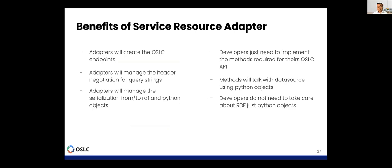Here we have the main concept: the Service Resource Adapter. We are using this as a meta class in which we define all the methods supported for the OSLC specification — the query capability, the creation factory, and so on. These methods will be defined in this meta class, and the adapters — the implementation of this class — will implement these methods for saying to the OSLC API which elements we want to expose. The benefit of using the Service Resource Adapter is that the developer doesn't need to take care about the implementation of the OSLC method — the adapter or Service Resource Adapter will handle it.